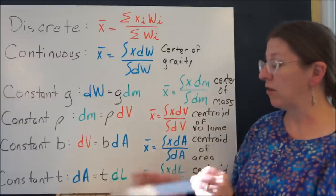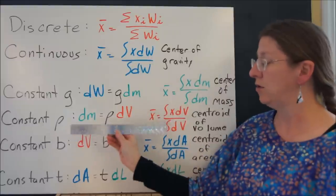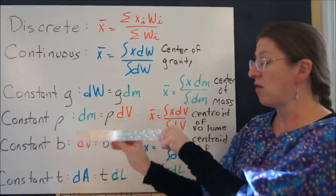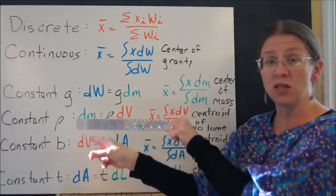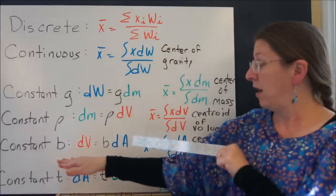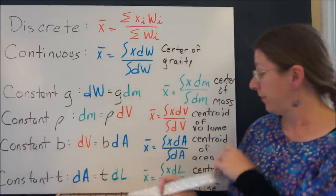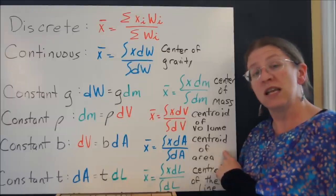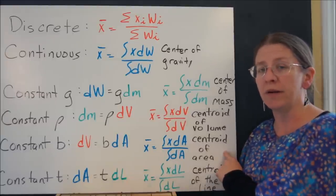If instead of having a three-dimensional object, we want to consider this as a flat, two-dimensional object, so that the thickness into the page is also a constant, I can factor that out and I get an area. This, if somebody just says I want a centroid, they're probably talking about a centroid of the area.